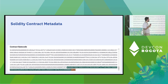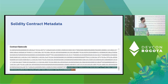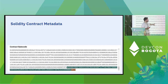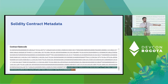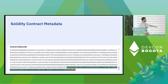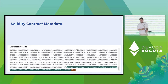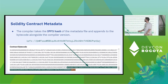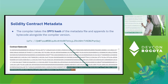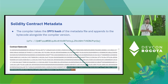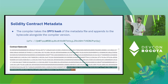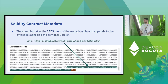You can also find traces of the metadata inside the bytecode. The bytecode has a special field appended at the end by the compiler. The compiler takes the IPFS hash of the metadata file and encodes that IPFS hash here alongside some other information.